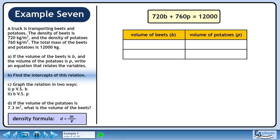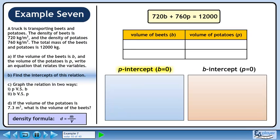In part b, we'll find the intercepts of the relation. Let's find the p-intercept in the blue box and the b-intercept in the orange box. At the p-intercept, b is 0, so plug in 0 for b.